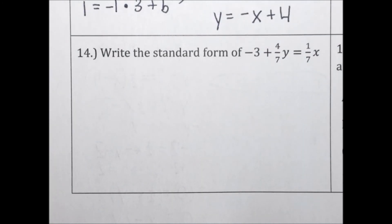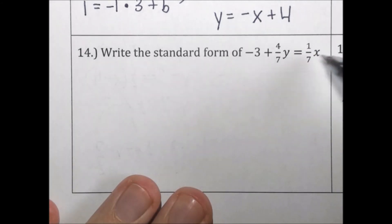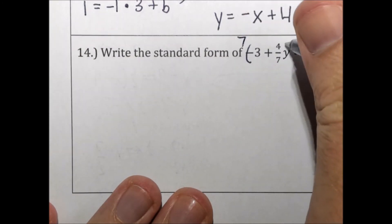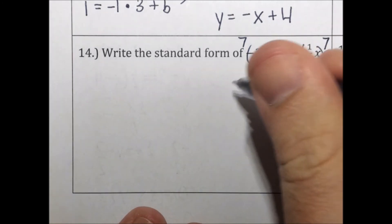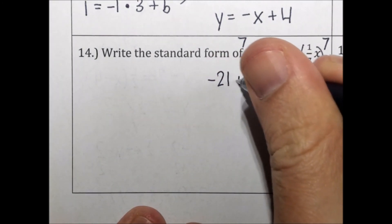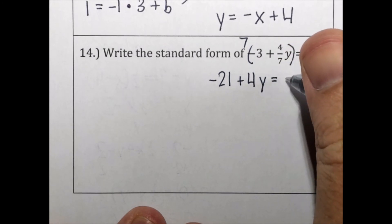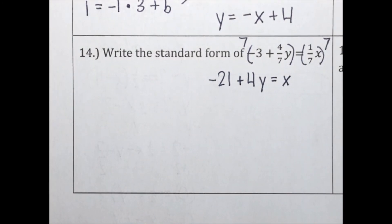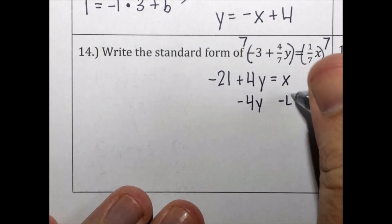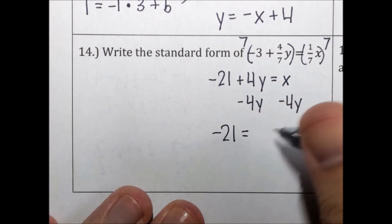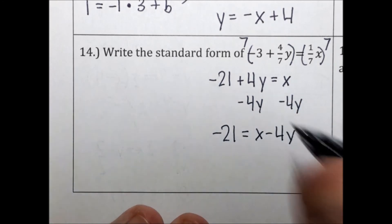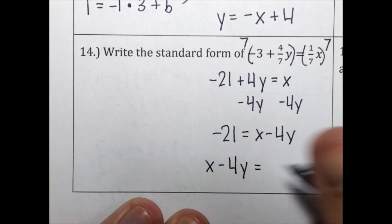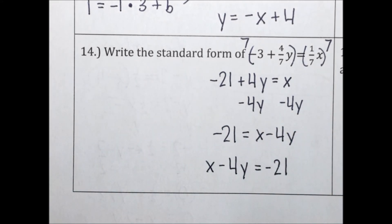Write the standard form of negative 3 plus 4 sevenths y equals 1 sevenths x. Multiply everything by 7 to eliminate fractions: negative 21 plus 4y equals x. For standard form, x and y must be together, so subtract 4y from both sides: negative 21 equals x minus 4y. Rearranging: x minus 4y equals negative 21.